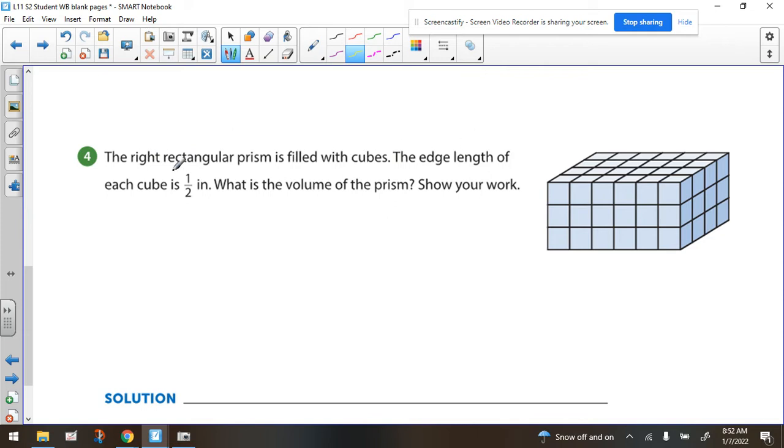The right rectangular prism is filled with cubes. The edge length of each cube is a half inch. So that means that from there to there is a half inch, which, by the way, means that this would be a full inch, right? One inch, two inch, three inches. So they want to know what's the volume of the prism, but they want to know not how many half inch cubes. They want to know how many full cubic units are there.